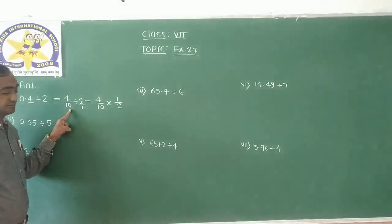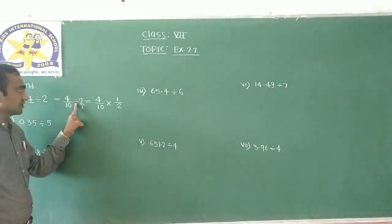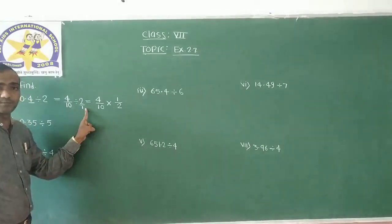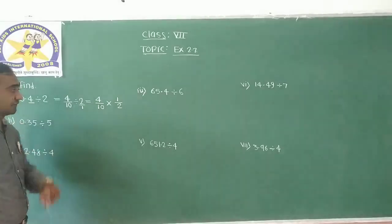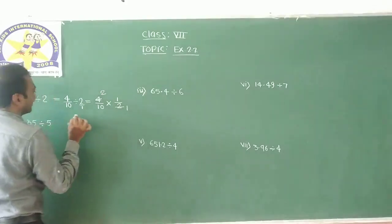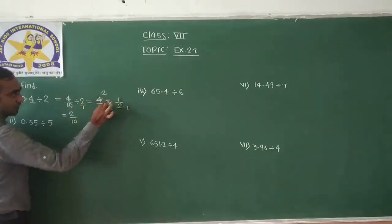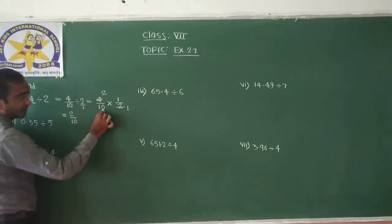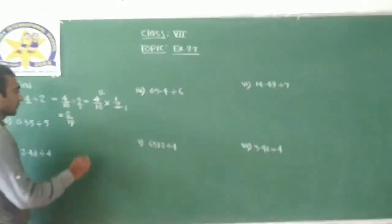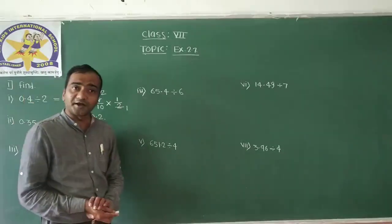So again: 4 by 10 divided by 2 by 1. Keep 4 by 10 as it is, convert the division into a multiplication, and take the reciprocal of 2 by 1, which is 1 by 2. Now make the calculation: in the numerator 4 times 1 is 4, and 2 times 10 in the denominator is 20. The denominator has 1 zero, so we place the decimal point after one digit. The final answer is 0.2.